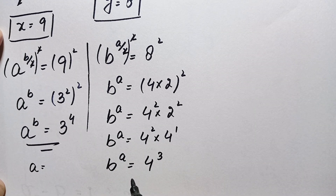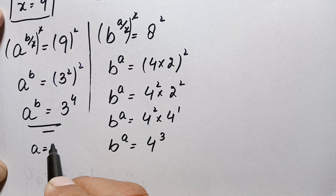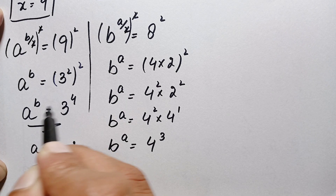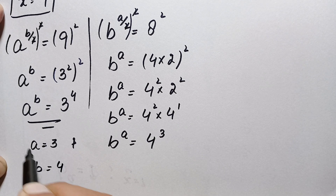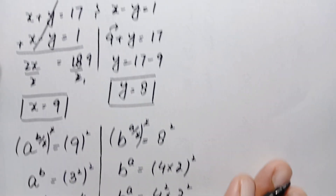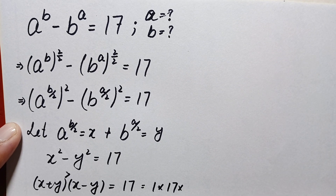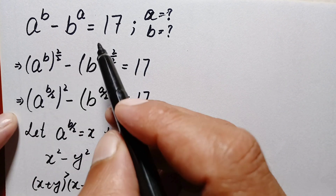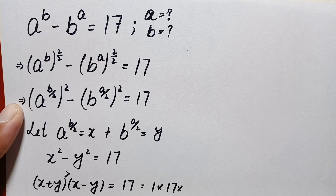Comparing both equations — a^b = 3^4 and b^a = 4^3 — we get a = 3 and b = 4 as our answer. We will now verify whether a = 3 and b = 4 are the exact and correct solutions to this problem.